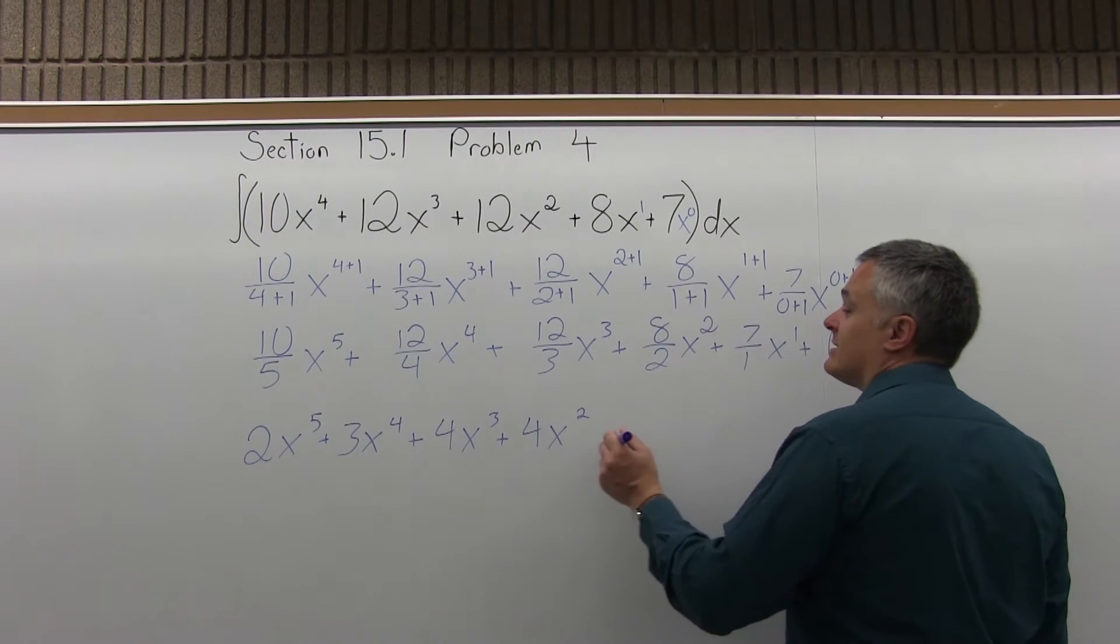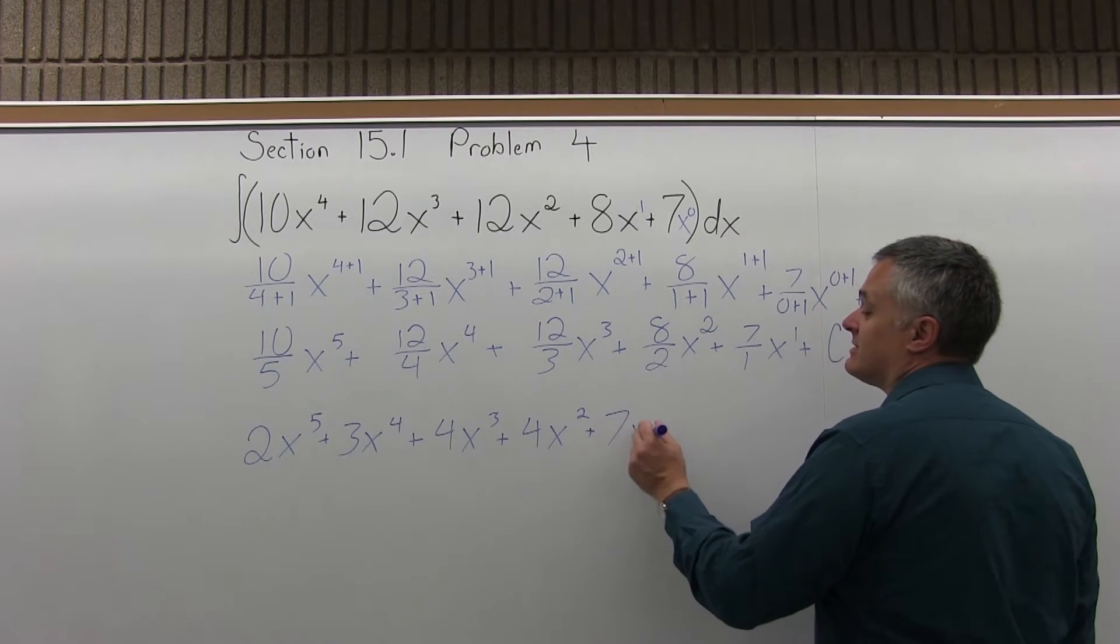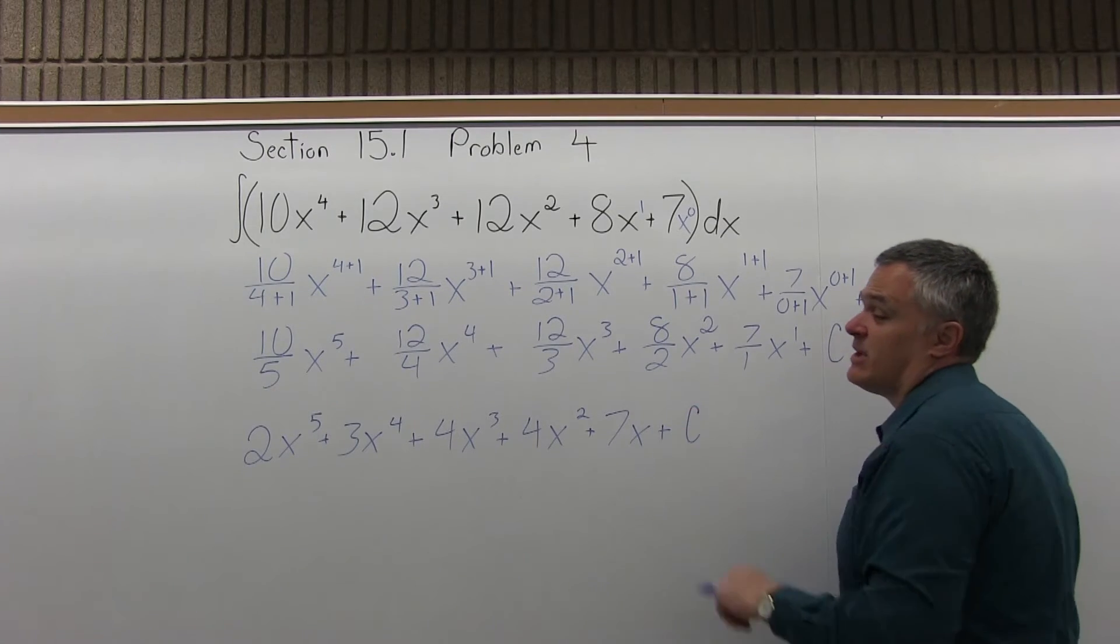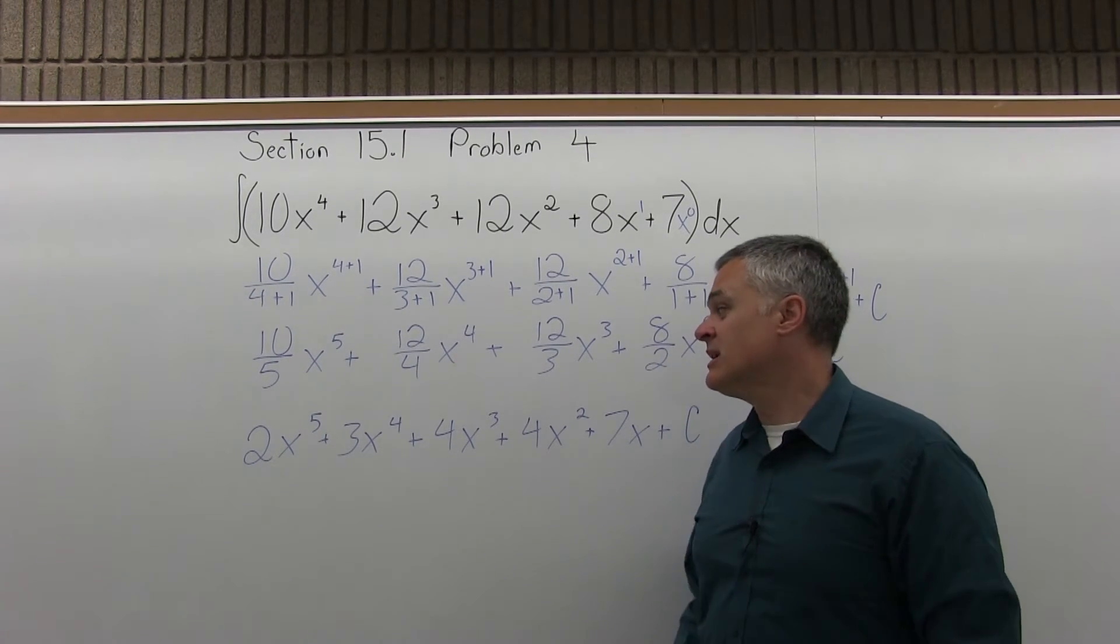And then plus 8 over 2, x to the 2nd will be 4x to the 2nd. Then 7 over 1, x to the 1st will just be 7x. And then some constant, some number that had no x with it.